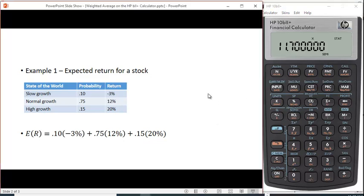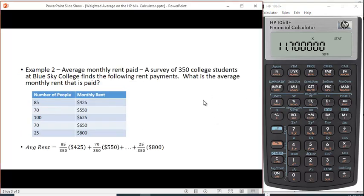Let's try one more. Suppose a college is interested in the average monthly rent that's paid. They survey 350 college students at Blue Sky College and they find the following rent payments: 85 people paid $425, 70 people paid $550, 100 paid $625, 70 paid $650, and 25 paid $800.